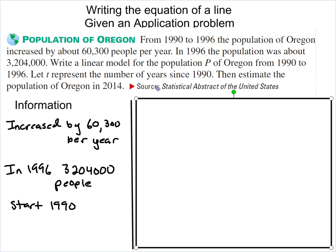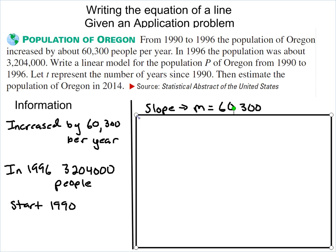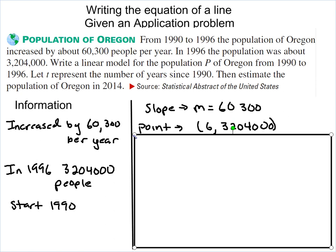We're looking for an equation that says write a linear model, which is another word for a linear equation. So we've got our slope, because that's where it says increased by 60,300 per year. That's a rate of change, so that's my m, 60,300. Next thing we're going to do is get our point. Now in this case, my point is 6 for 1996, because we're starting in 1990, so it's six years later, and the population of 3,204,000. Now we have our slope and a point.